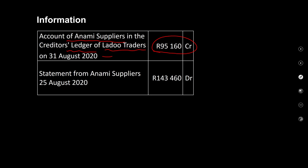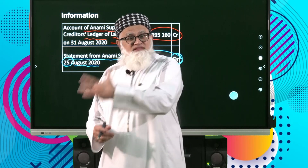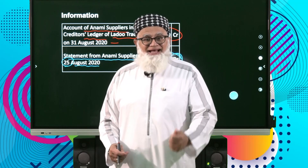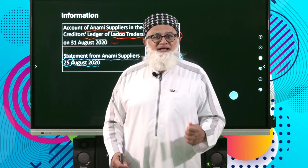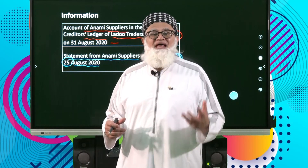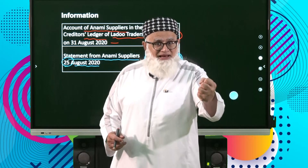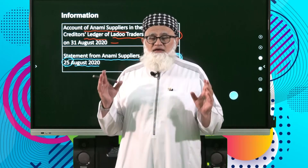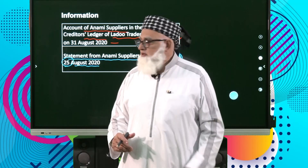The statement from Anami suppliers dated 25 August 2020 says we owe them 143,460 — shown as a debit balance. Our books show a credit balance because it's a creditor, but their books show a debit balance because they say Ledger traders owes us money — we become their debtor. Understanding why our books show a credit balance and their books show a debit balance means half your battle is won.